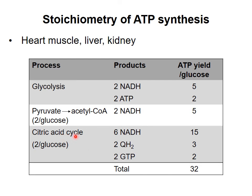Each turn of the citric acid cycle produces three NADH, one QH2, and one GTP, and therefore two turns of the cycle will give us six NADH, two QH2, and two GTP. The six NADH are worth 15 ATP total, the two QH2 are worth three total, and of course the two GTP are two ATP equivalents. So the citric acid cycle steps of this oxidation process give us 20 ATP total. Adding all these numbers gives us a total of 32 ATP produced from oxidation of a single glucose molecule in liver, kidney, and heart muscle.